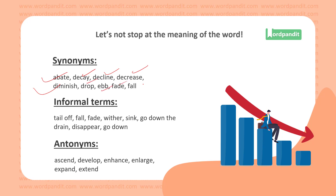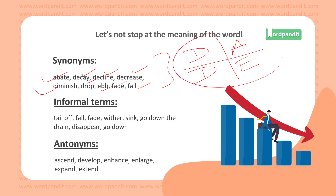Drop, fall, fade — you should make a cluster of synonyms. Always try to remember more than one word with a single meaning; that way you multiply your learning. In the word cluster for dwindle, there should be dwindle, diminish, abate, and ebb. These four words are slightly difficult, while decay, decline, decrease, drop, fall, and fade are easier words.